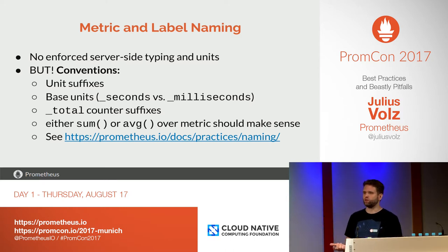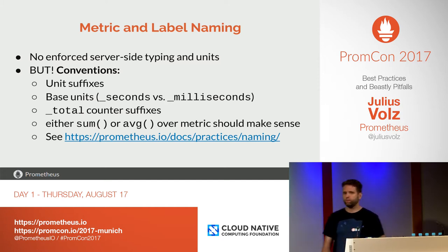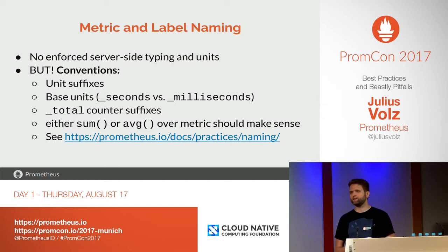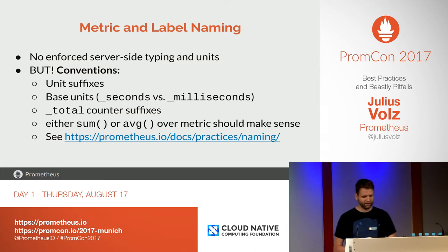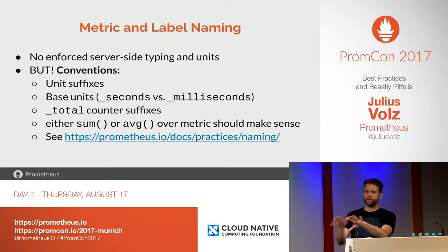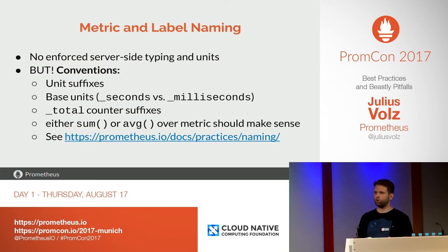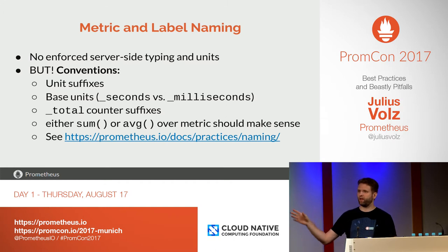Distinguish gauges from counters — current tallies from cumulative counts over time — by adding an `_total` suffix on counters and no such suffix on gauges. A nice rule of thumb: all the series belonging to the same metric name should either make sense to sum over all of them, or to average over all of them. That means all label dimensions on a given metric name should partition that metric space completely and without overlap. For example, if you expose CPU usage in seconds with a mode label, have modes like idle, user, and system — but don't add mode=total, because that overlaps with the others and will get double-counted. Leave that out and do any summing in Prometheus instead.